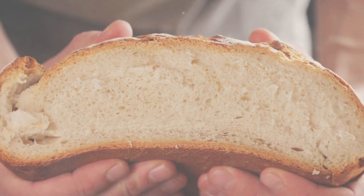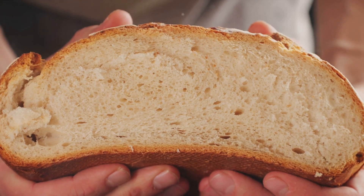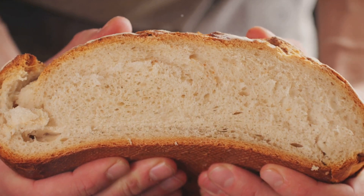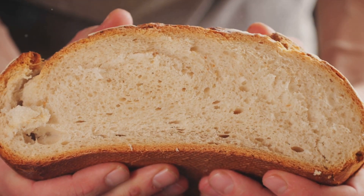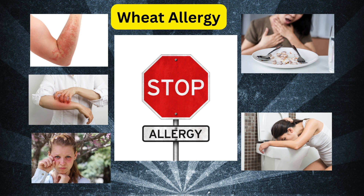Moving on, third on our list is wheat allergy. Contrary to celiac disease, a wheat allergy is an immediate allergic reaction. It's crucial to recognize the symptoms and know what to avoid, including hidden sources of wheat in foods and even non-food products. Symptoms include digestive issues like nausea, vomiting, diarrhea, and abdominal pain, skin reactions, respiratory problems, and anaphylaxis — a life-threatening reaction.